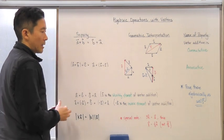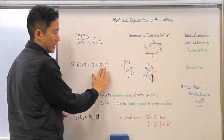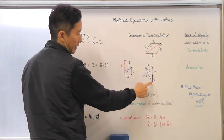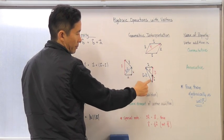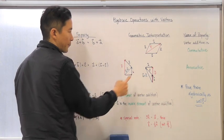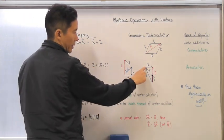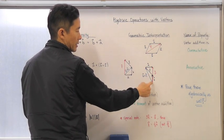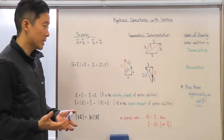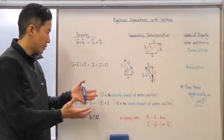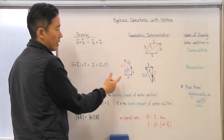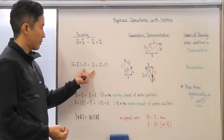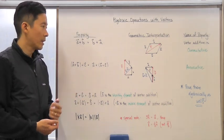Now on the right-hand side, we take vector b plus vector c first — here's vector b, here's vector c — and the resultant is the blue vector representing b plus c. Then adding vector a: starting from here, going to here, going from here to there. Notice that the resultant for both sides of the equation has the same direction and same magnitude, so these two are in fact equal.